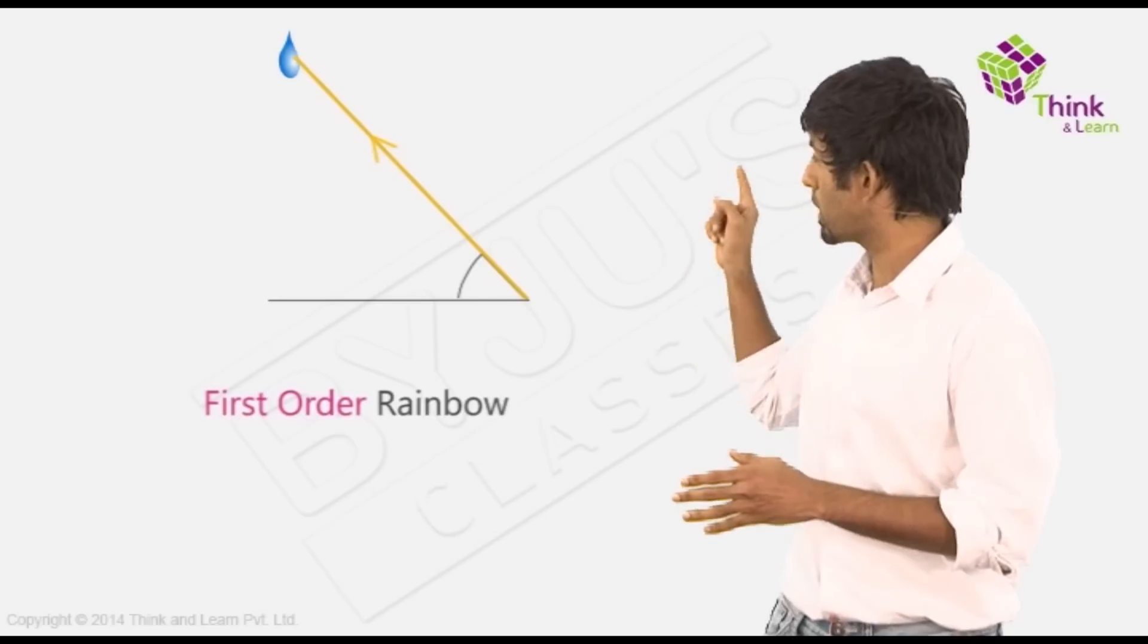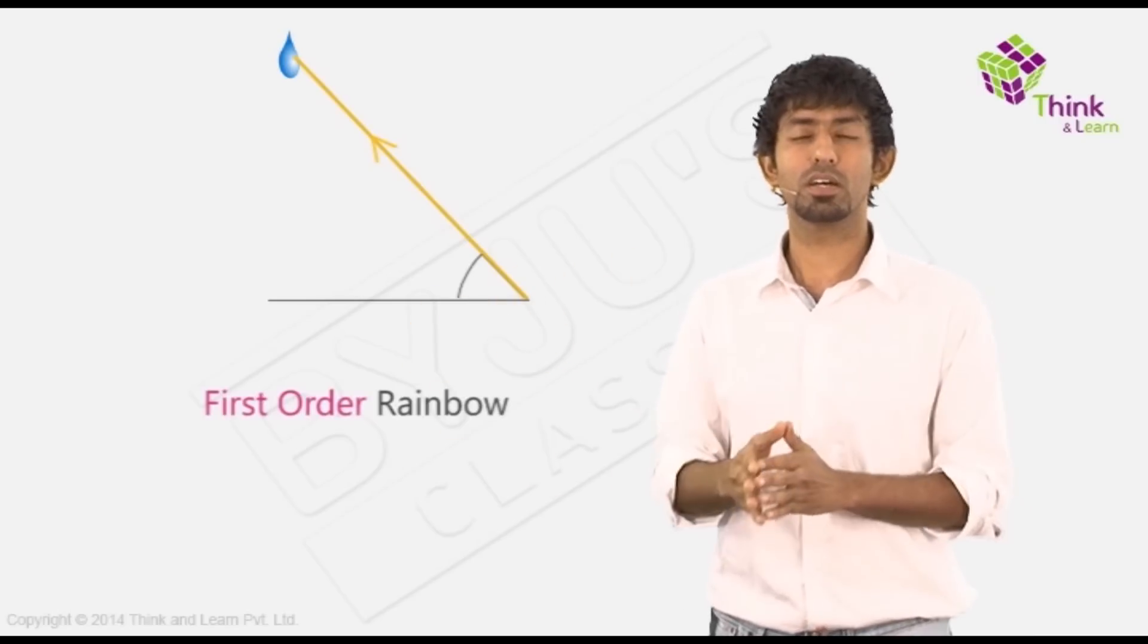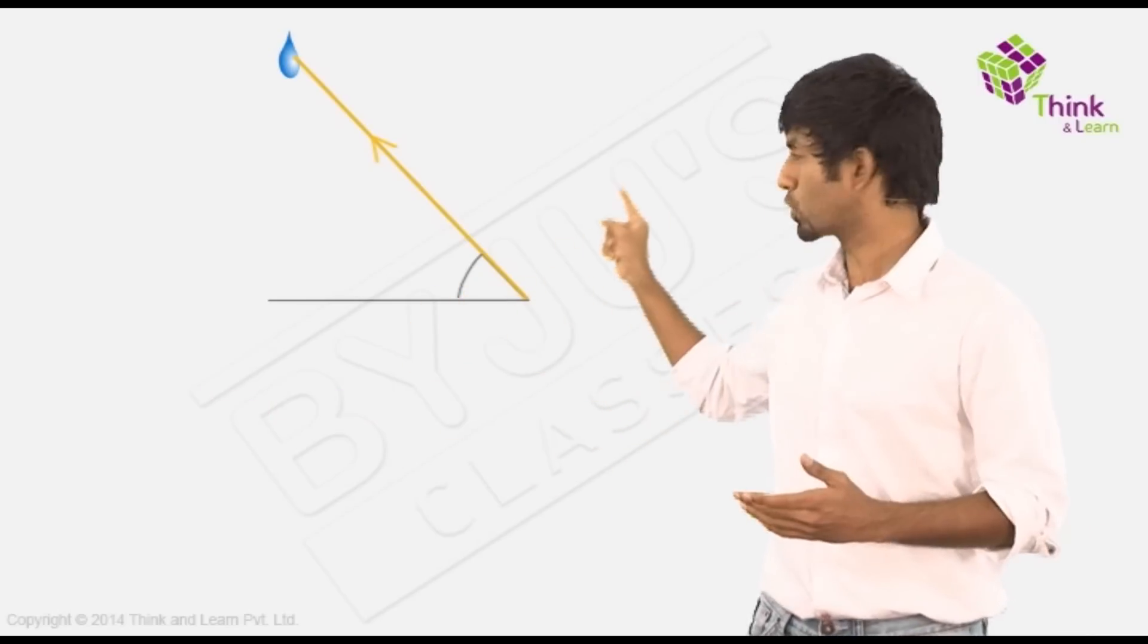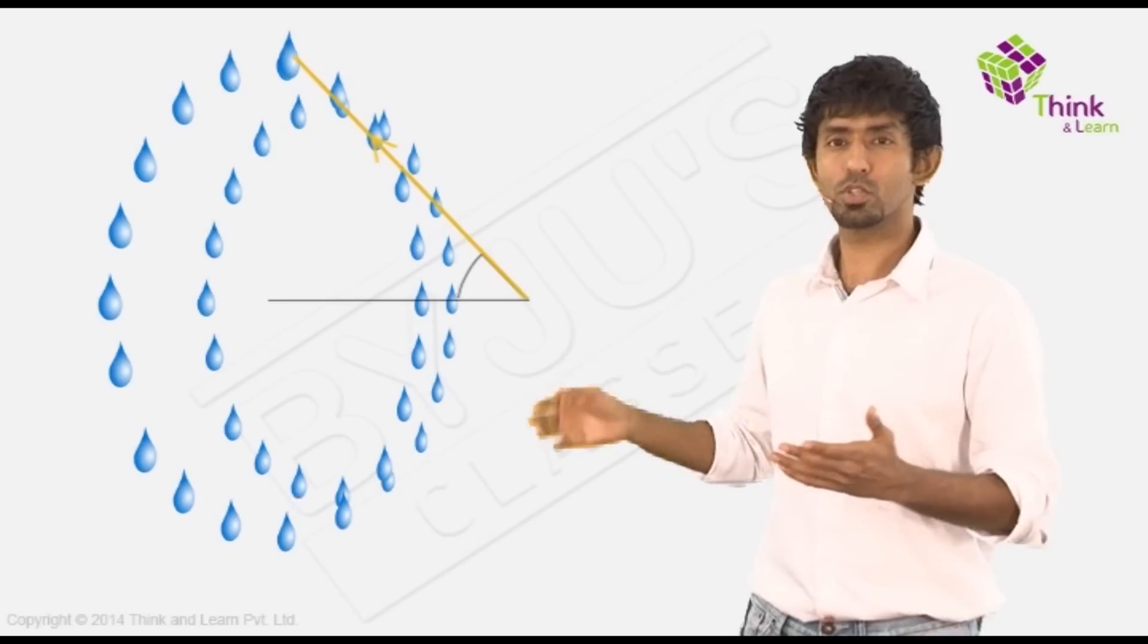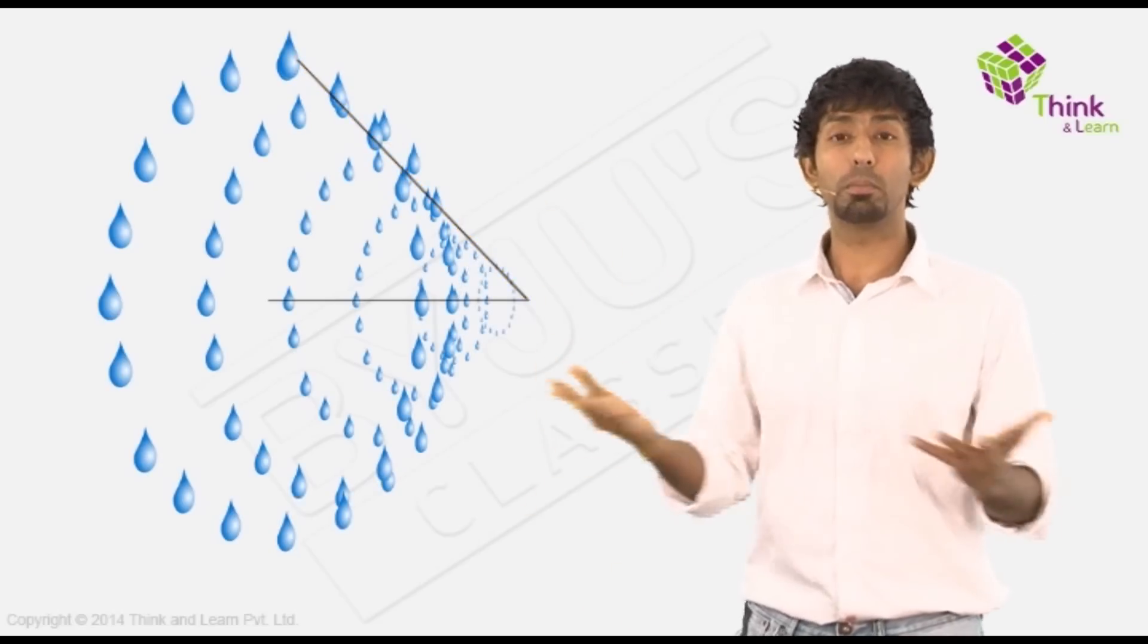Now clearly, any raindrop along that angle will create a rainbow for us. But how many such raindrops exist? If the world was 2D, if it was flat land, only one. But the world is three dimensional. So if I was to take that and circle it around, what would you get? A complete cone.